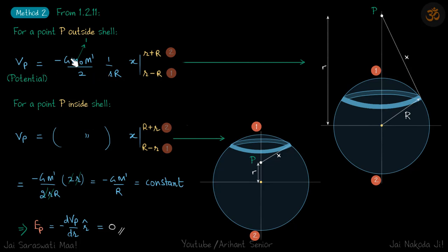I think there we are talking about potential energy, that's why we had term m naught, but here we are talking about potential, so we will put m naught as one. This is the potential at a point P when it is outside the shell. Now if we take the point P inside the shell, these terms are going to be same, but the limits of x are going to change. x is varying from this point to this point.